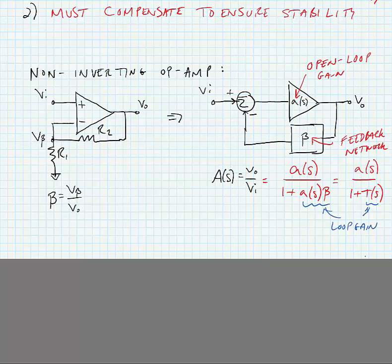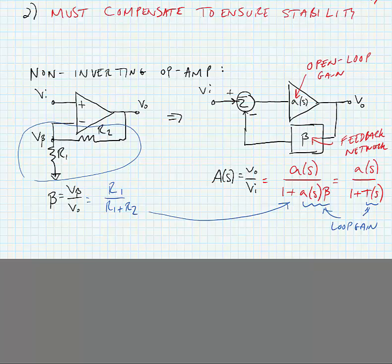We can solve for beta using the resistor divider here. It's equal simply to R1 divided by R1 plus R2, and we could substitute this in. We know A of s — if little a sub-s is large — is approximately equal to 1 plus R2 over R1 for this circuit. In the next set of slides, we're going to start examining some criteria for stability.